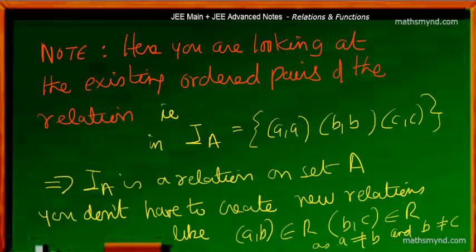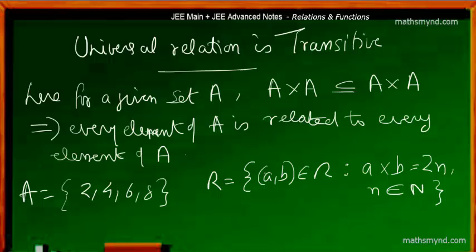Now, what about the universal relation? We know that when considering a given set A, it simply means that the Cartesian product of the set with itself is a subset of A×A itself, which simply means that every element of A is related to every element of A.